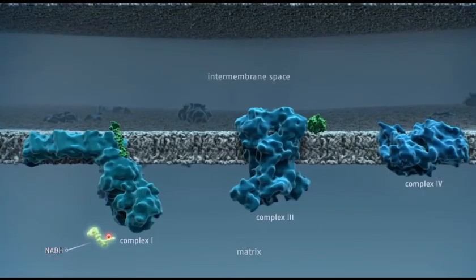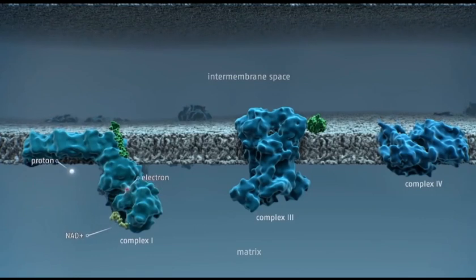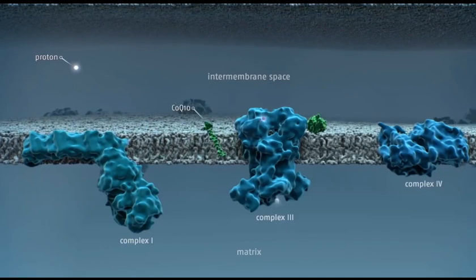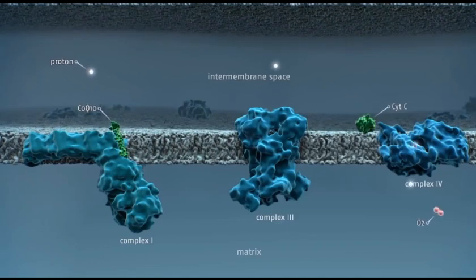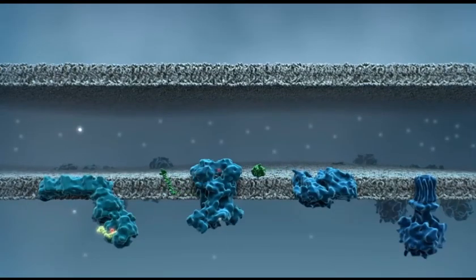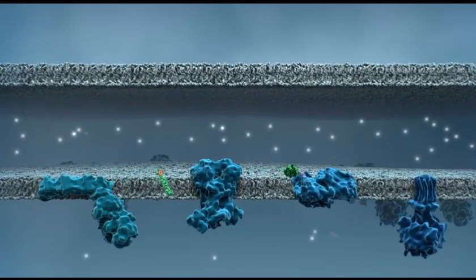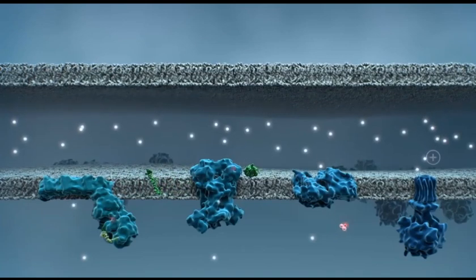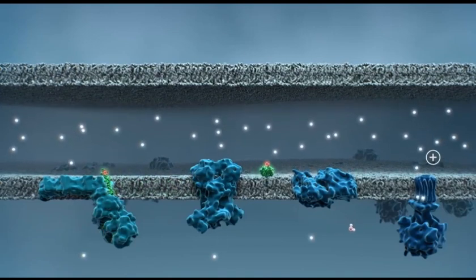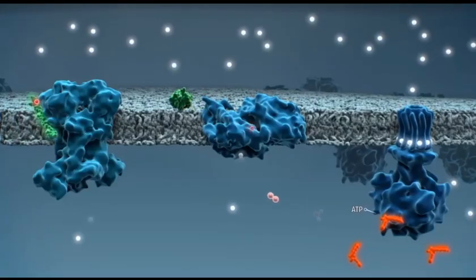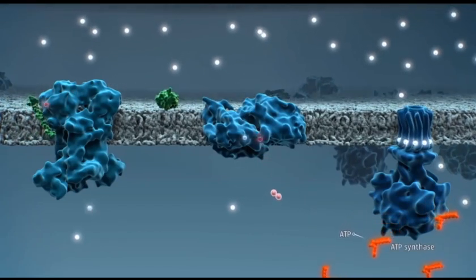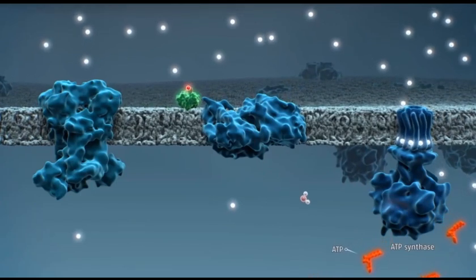Nutrients provide high-energy electrons in the form of NADH, which are used by the protein complexes to pump protons from the matrix to the intermembrane space. This continuous pumping creates a proton gradient, where the positively charged protons are attracted to the more negative matrix. When the protons re-enter the matrix through the ATP synthase protein complex, they catalyze the production of ATP.